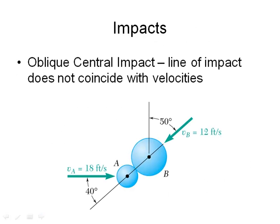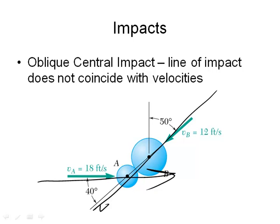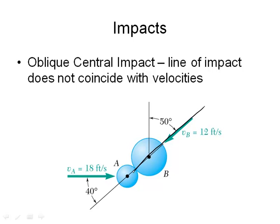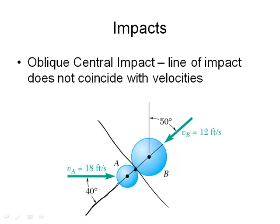Let's take a look at oblique central impacts. In this case, we have two hockey pucks coming together and they collide. Hockey puck B is moving along one line, hockey puck A along another. For simplicity, we're letting the velocity of hockey puck B be along the line of impact. Here's the point of impact — there is a mutual tangent, and at 90 degrees to that is the line of impact.